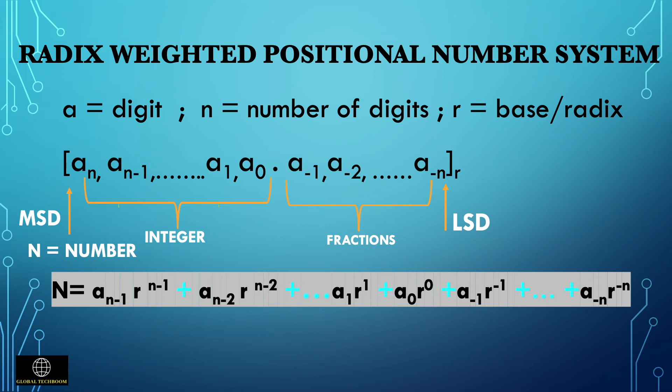Using the radix-weighted positional number system principle, we can convert into any number system. A radix or base is the number of unique digits including 0. Let R be the base or radix of a number system; then the digits used range from 0 to R minus 1, giving R total digits. The digit at the leftmost position has the highest positional value and is called the most significant digit (MSD). The digit at the rightmost position has the least positional value and is called the least significant digit (LSD).